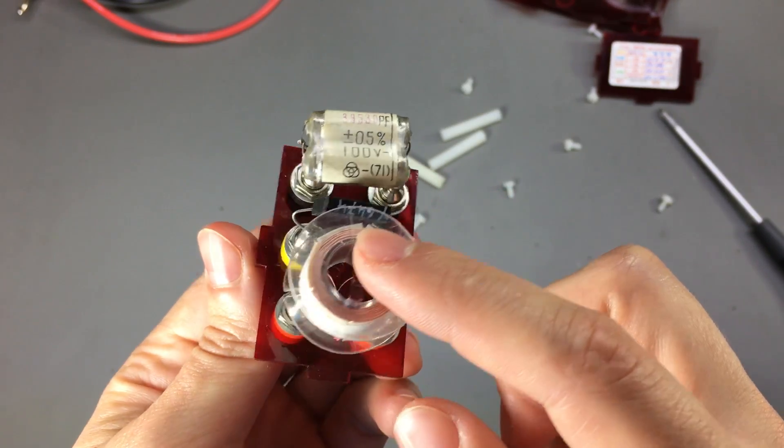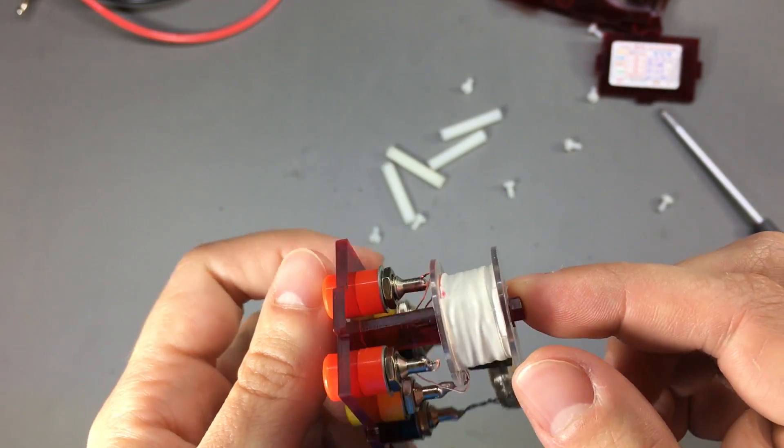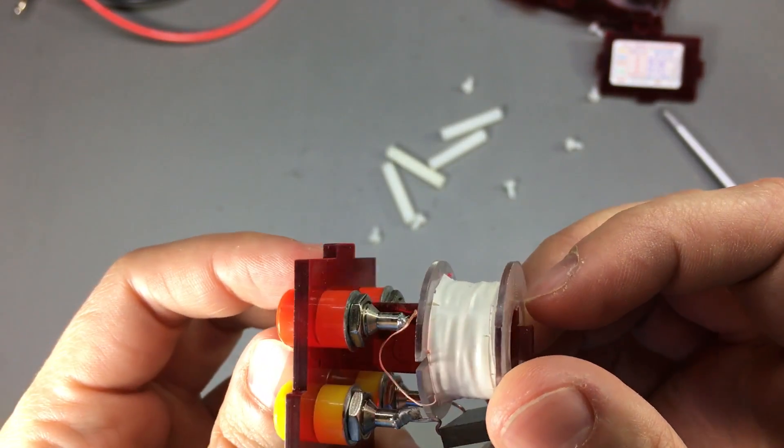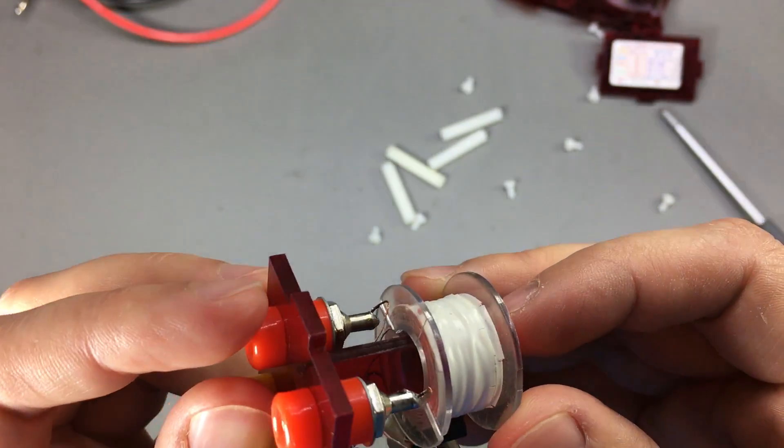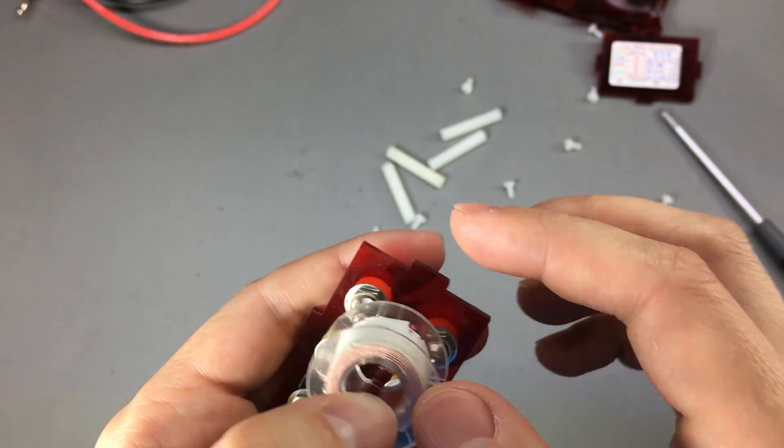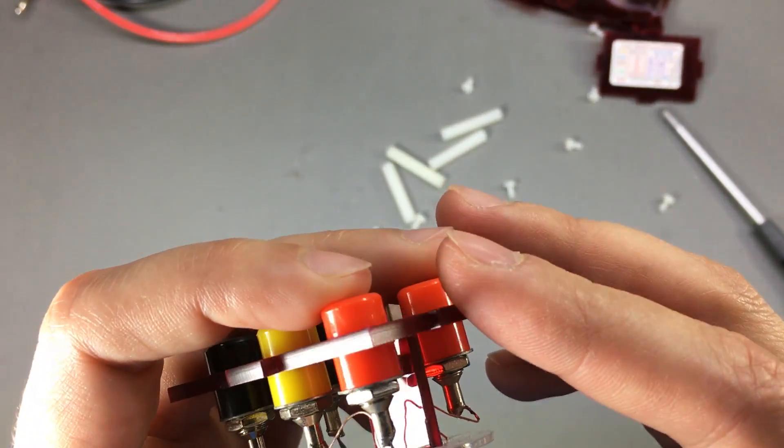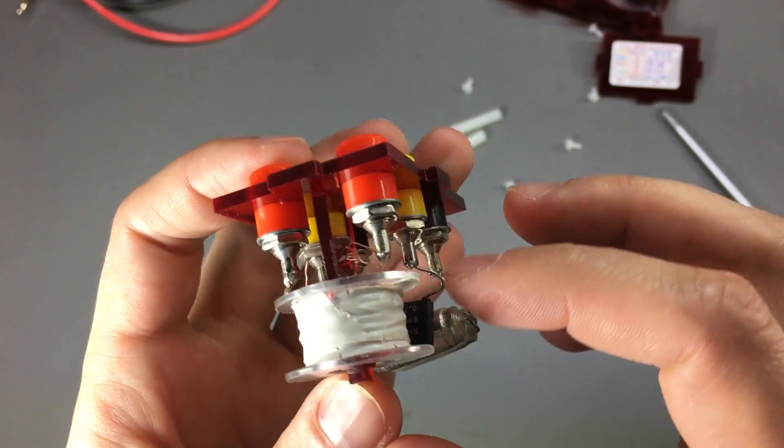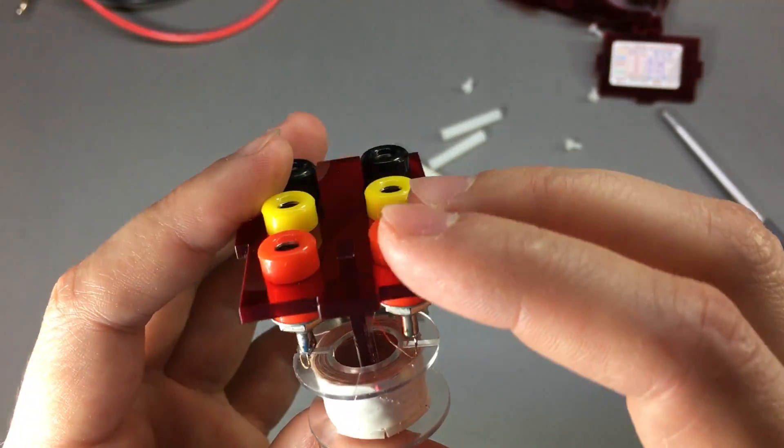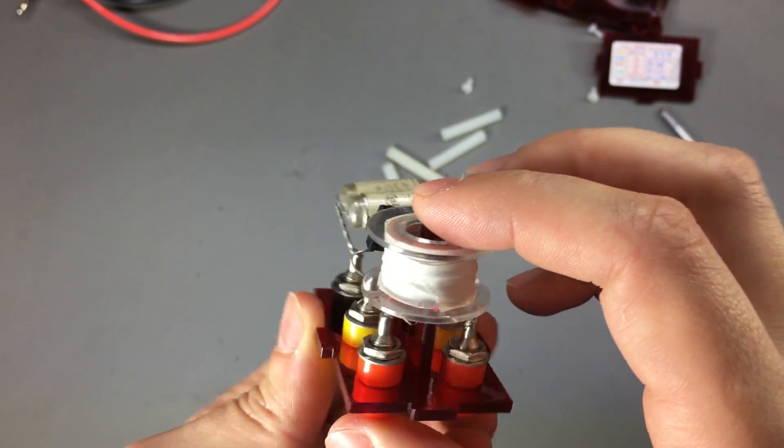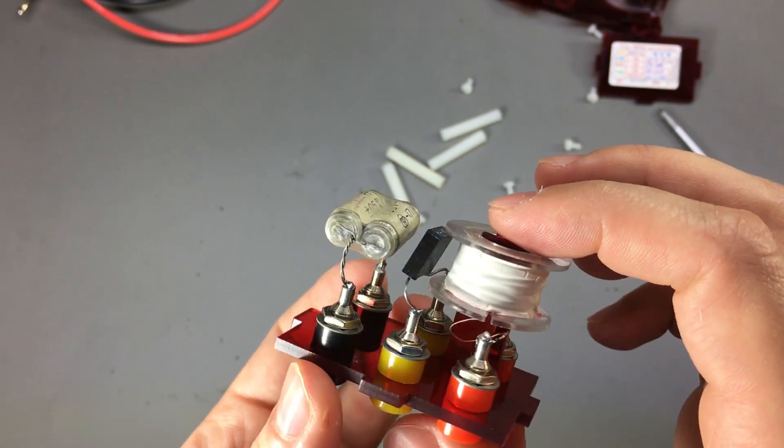The inductor doesn't seem to have any markings. It's just a piece of insulated wire wrapped on this plastic roll and it's isolated with a bit of tape. There are no markings on the inductor, so I'm not sure if this inductor really is anything special.